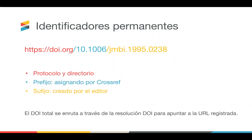Algunos miembros tienen una publicación y otros tienen múltiples. Se puede usar un prefijo para registrar todo el contenido, incluso si publica diferentes tipos, como libros y revistas. La sección amarilla es el sufijo, que es asignado por el editor y es único para cada elemento de contenido. Cada miembro tiene un horario de publicación único. Los DOI se pueden registrar en cualquier momento y no hay un número mínimo o máximo de artículos que pueda registrar.